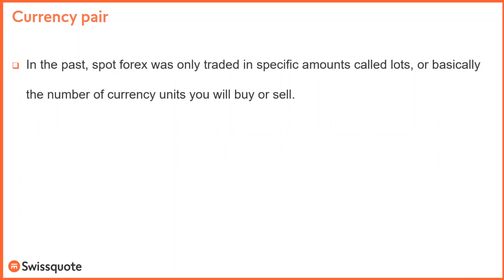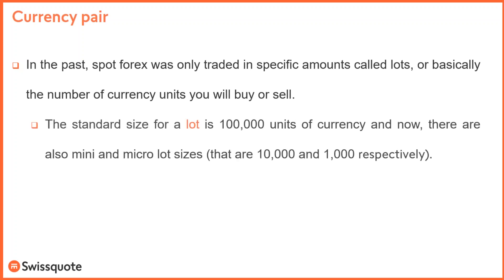In the past, the spot forex was only traded in specific amounts called lots. Now we speak about the notional value of the contract. The standard size of a contract in the currency market — the spot market — is 100,000 units of the first currency, the base currency. So if you buy EUR/USD, if you buy 100,000, this contract is called a standard lot. A lot is a contract of 100,000 of the first currency.